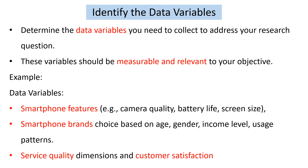The second step is to identify the data variables. We determine the data variables we need to collect to address our research questions. These variables should be measurable and relevant to our objectives. Once we define our objectives, the next step is to find out the data variables that can answer our research objectives.